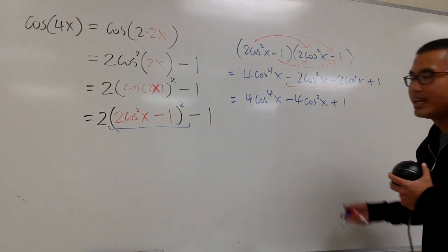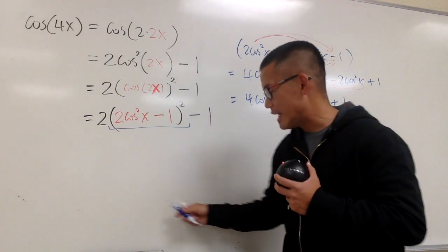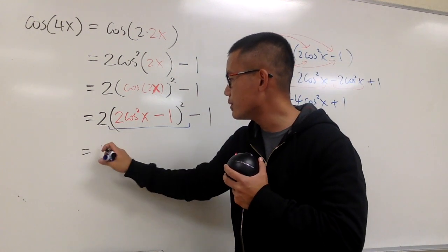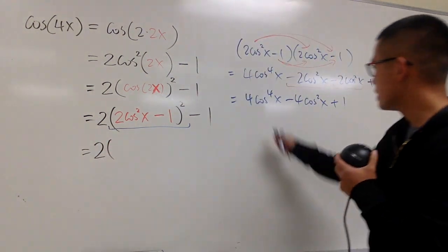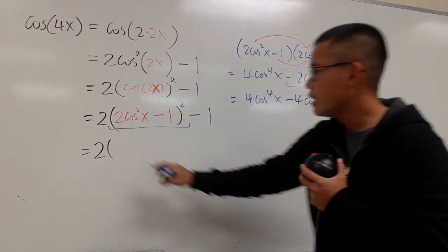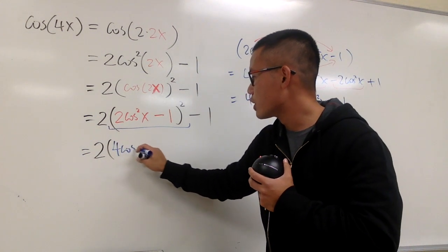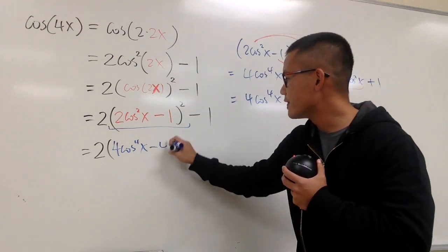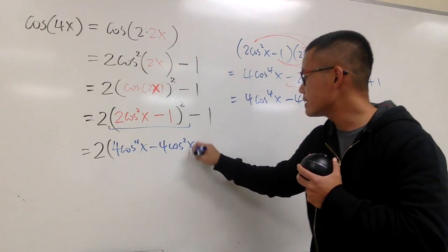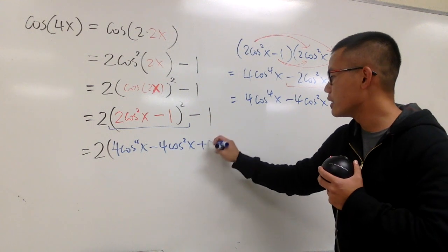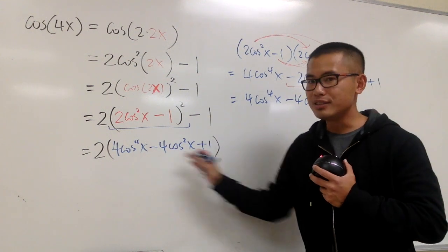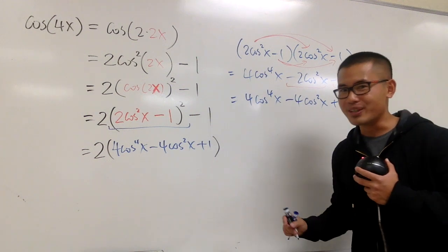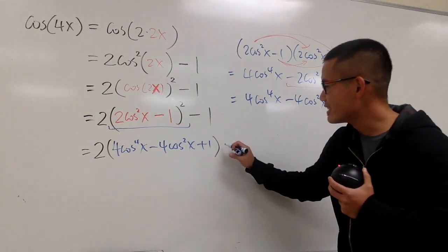This right here is that squared result. We still have that 2 in the front, so let's write it down as 2 times parentheses of 4 cosine to the fourth power x, minus 4 cosine squared x, plus 1, and then minus 1 at the end.